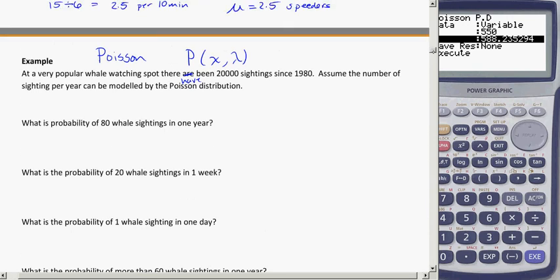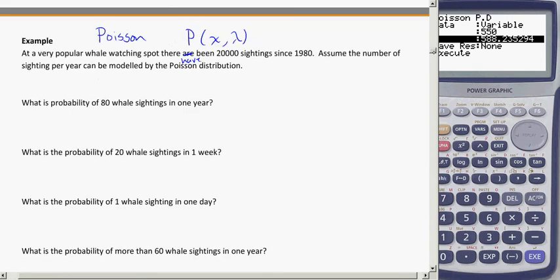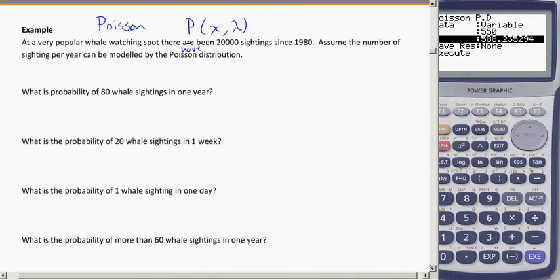And we need to figure out the information. So remember with Poisson, we're always looking for the time or the rate. If there have been 20,000 sightings since 1980, how many sightings on average per year is that? So we could say 20,000... Since 1980, well, 2014 to 1980, that's 34 years that has passed.